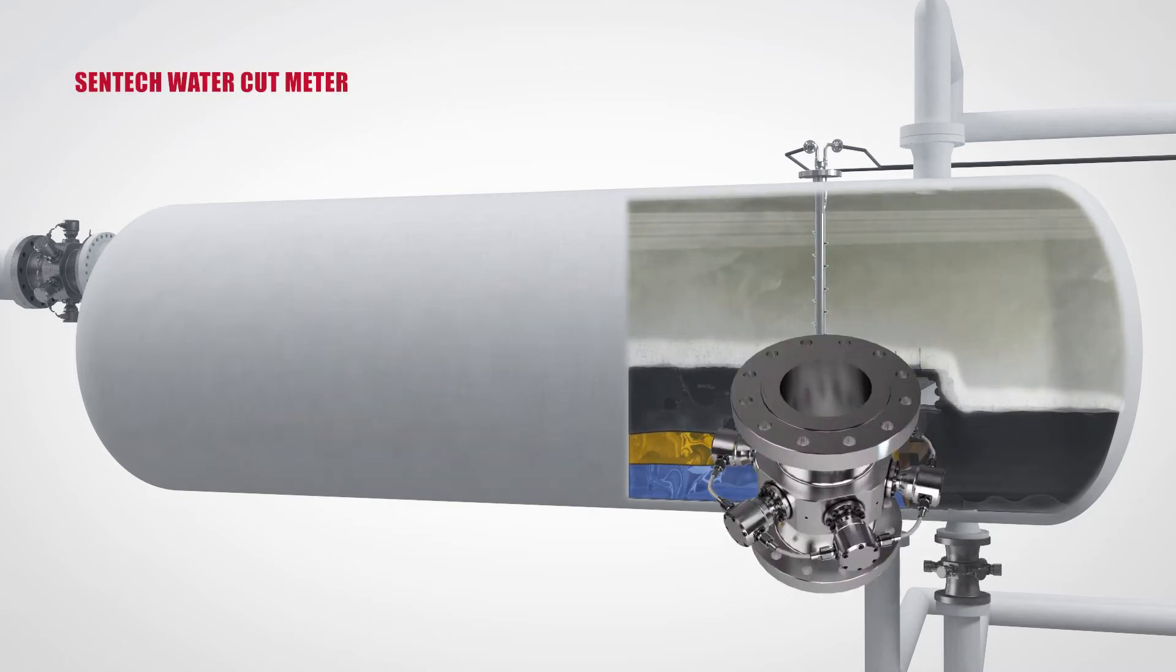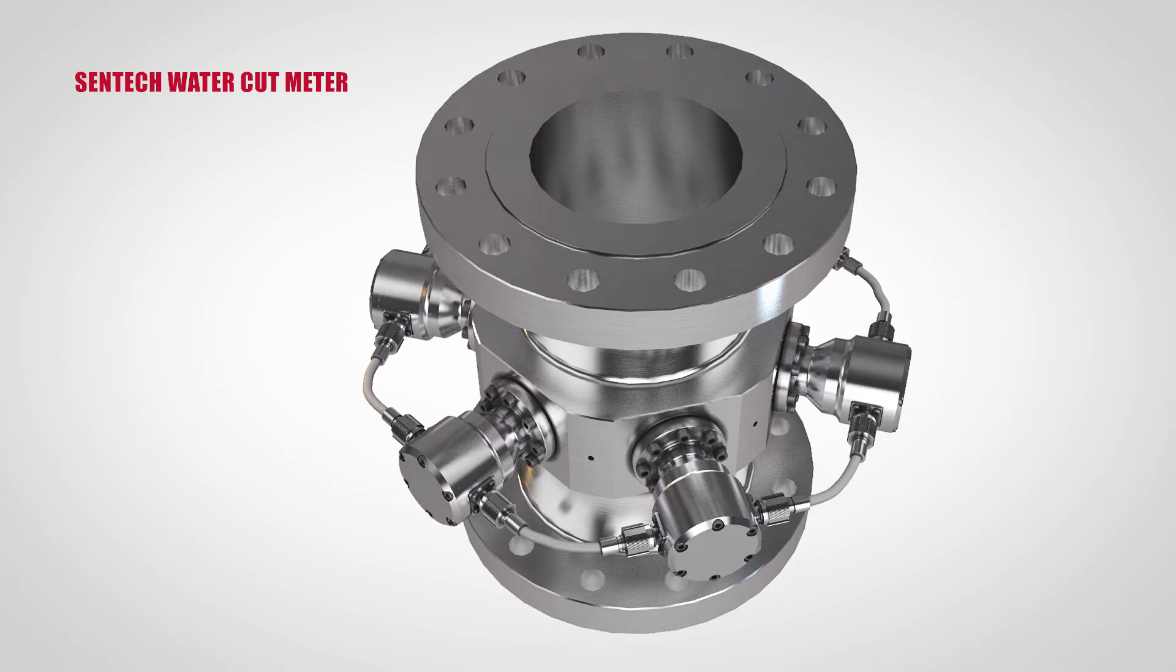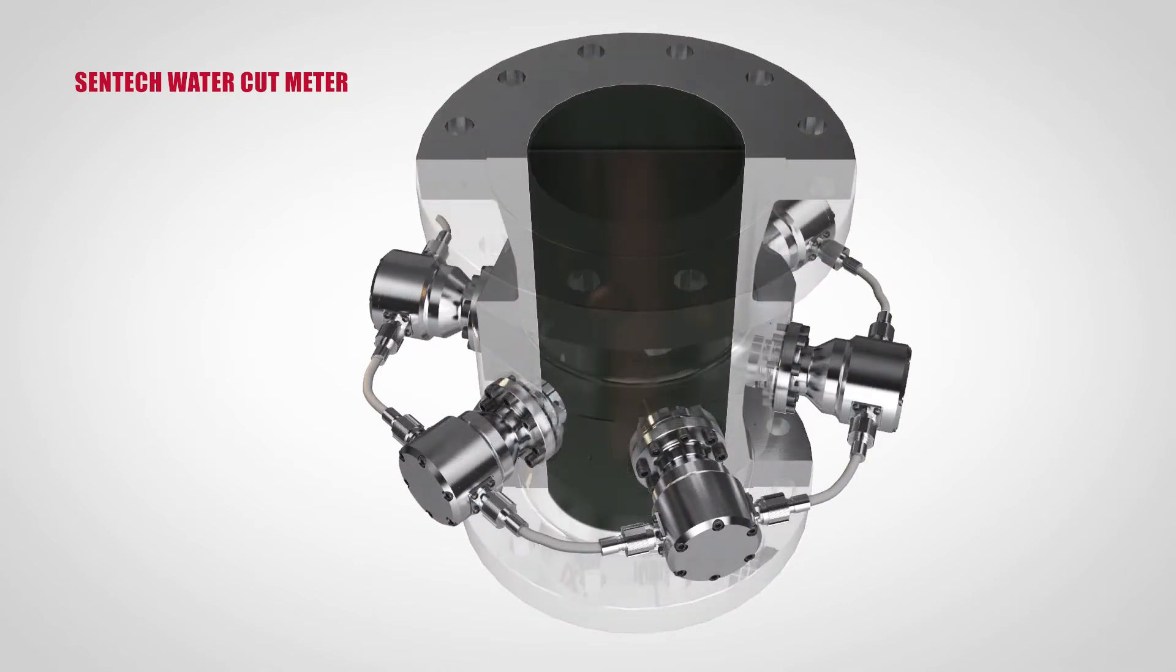The CENTEC WaterCut Meter employs multiple CCAP sensors to measure not only 0-100% water, but also detect whether the flow is well-mixed, separated or sluggish. Available for any pipe diameter.